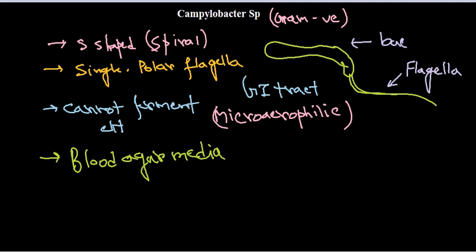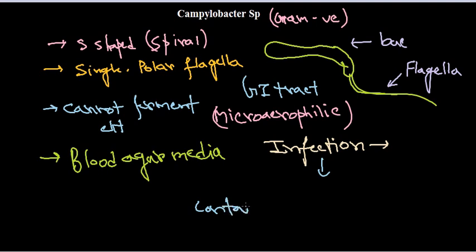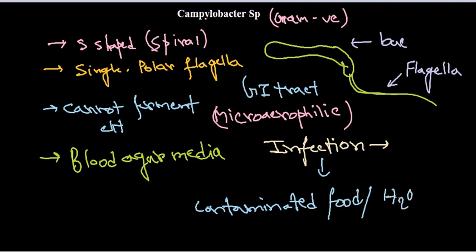As they are GI tract microorganisms, they are related with different kinds of GI tract infections. These infections may lead to diarrhea, nausea, vomiting, abdominal cramps, and fever. Most of the time this kind of GI tract infection is caused due to contaminated food or water. Also, as they have flagella, they are motile in nature.